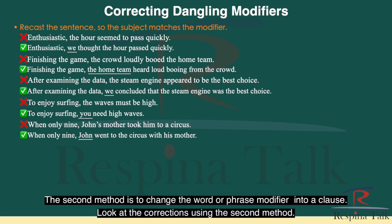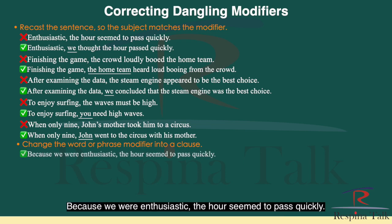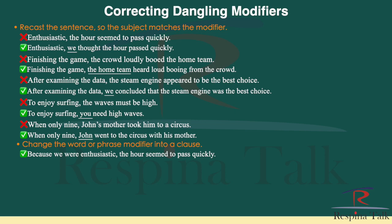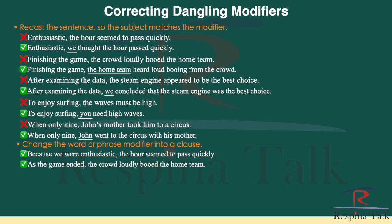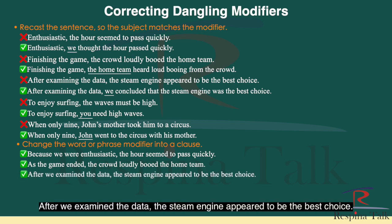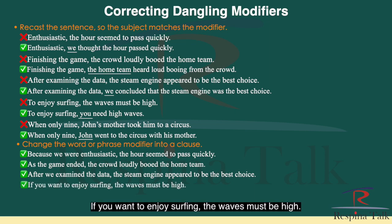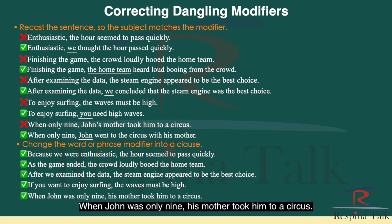The second method is to change the word or phrase modifier into a clause: "Because we were enthusiastic, the hour seemed to pass quickly." "As the game ended, the crowd loudly booed the home team." "After we examined the data, the steam engine appeared to be the best choice." "If you want to enjoy surfing, the waves must be high." "When John was only nine, his mother took him to a circus."